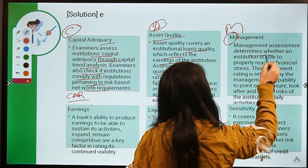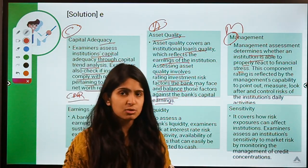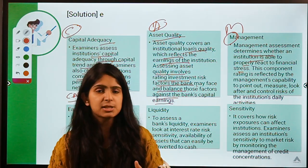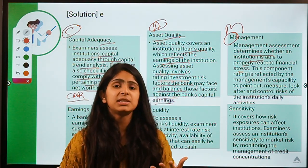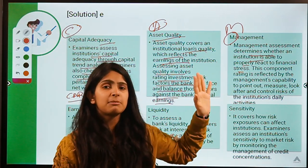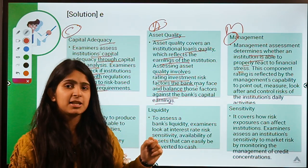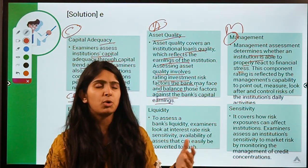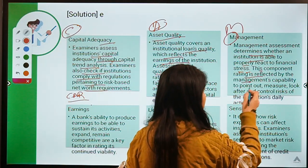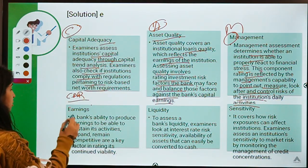M stands for Management — whether an institution is able to properly react to financial stress. This covers whether top management officials supervise everything properly and are prepared to handle situations like COVID-19. The quality of management is critical; in Yes Bank's case, the major issue was with management. Most companies that fail have problems with their management component — the capability to identify, measure, and control risks in the institution's daily activities.